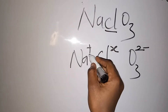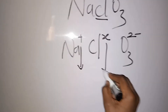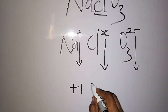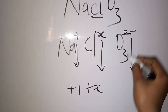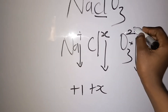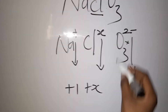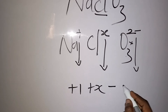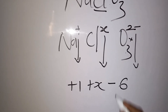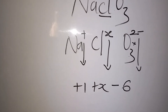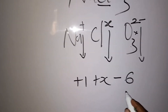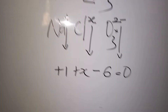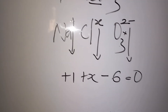We bring down the oxidation states: sodium is +1, chlorine is +x, and oxygen is 3 × (−2) = −6. Setting up the equation: +1 + x + (−6) = 0.